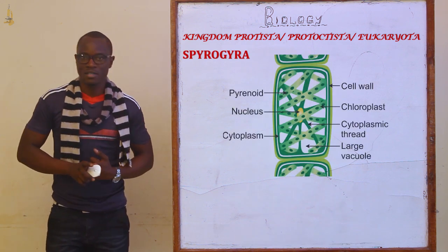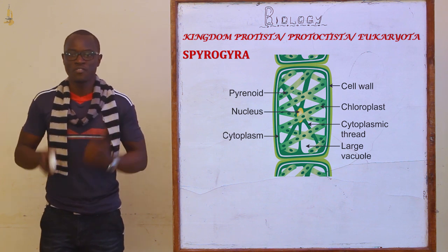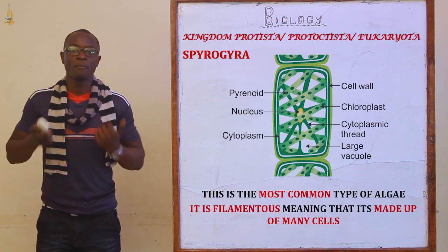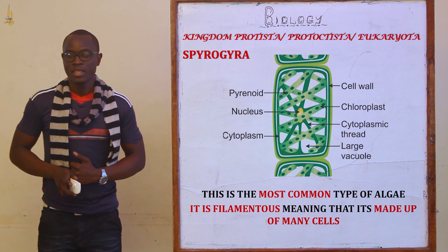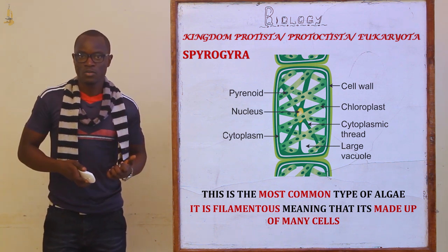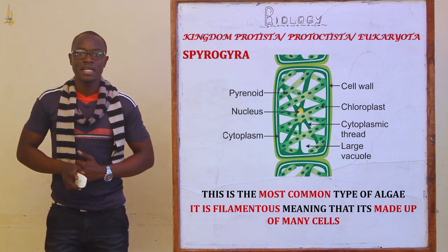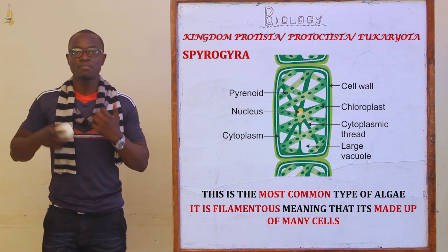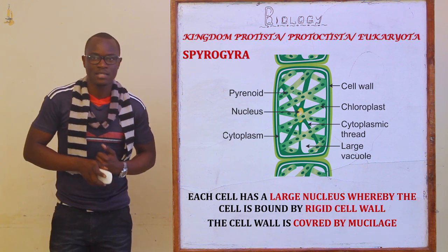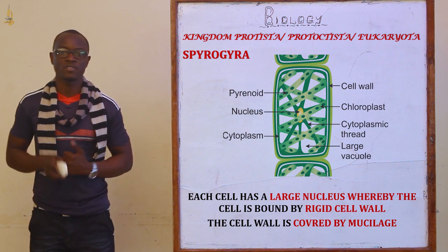Now let's look at the next type of algae in Kingdom Protoctista, which is the filamentous algae referred to as Spirogyra. Spirogyra is the most common type of algae known. It is filamentous, meaning that it is made up of very many cells. If asked why it is filamentous, you would say it is made up of very many cells, each with a large nucleus, bound by a rigid cell wall made up of cellulose.